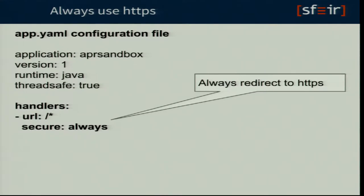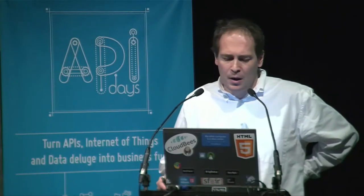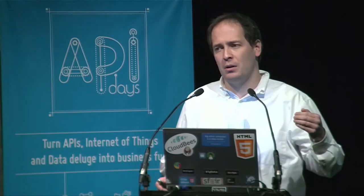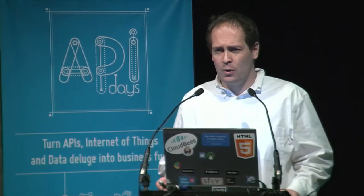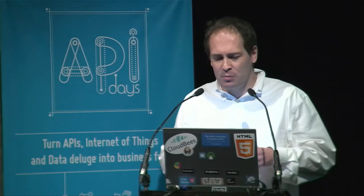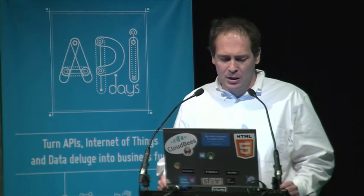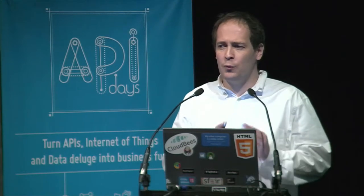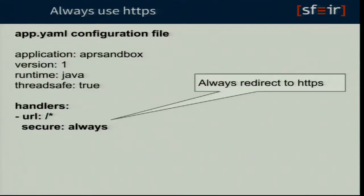We wanted to do a service-oriented architecture for a corporate world, so security is a big thing. You want to communicate over HTTPS always, and force all access to HTTPS. On Google App Engine, you can develop in Java, Python, Go, or PHP. There's a configuration file — app.yaml — where you define the name of your application, the version, and the runtime. To force users to always use HTTPS, you just put those three lines in the configuration file. That's it — you don't have to modify Apache configuration.